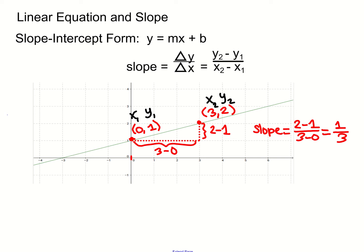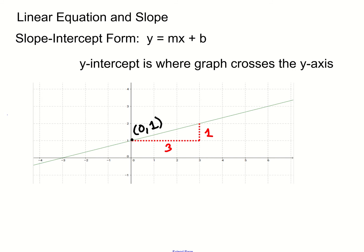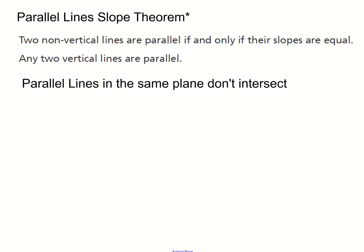Now we have the slope. Next we need to find the y-intercept — that's where the graph crosses the y-axis. It crosses at 1, and that coordinate is 0 comma 1. The y-coordinate is referred to as b in the formula. The slope we found, one third, is m. So we plug in: the equation of the line in slope-intercept form has slope one third and y-intercept 1.